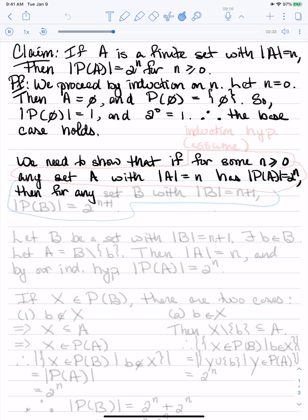then for any set B, the power set of B with cardinality n plus 1, the power set of B has 2 to the n plus 1 elements.